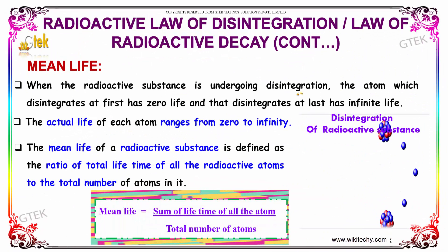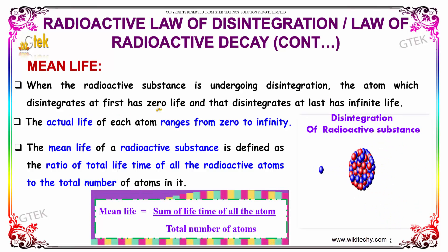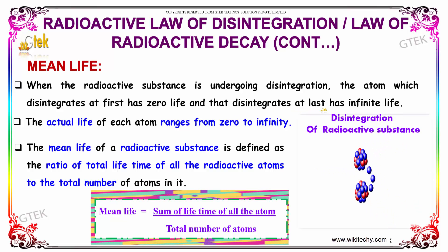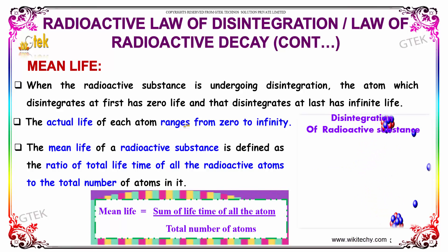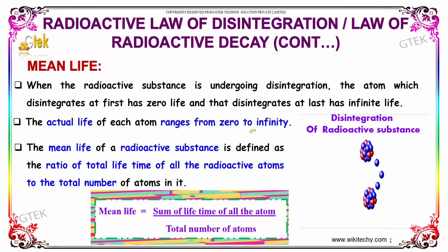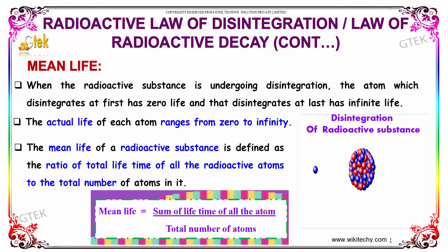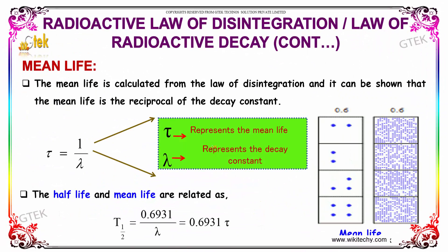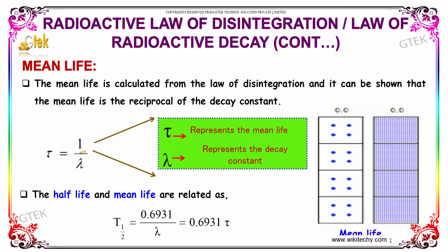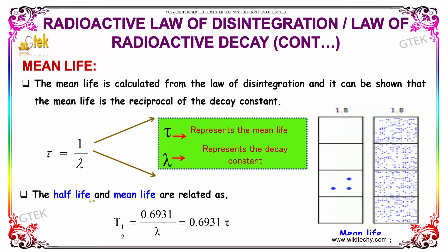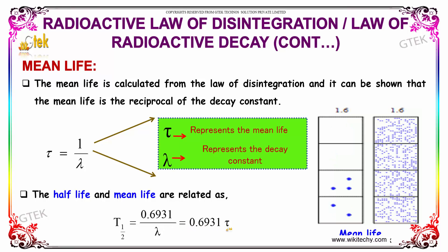When a radioactive substance undergoes disintegration, the atom which disintegrates first has zero life, and the atom that disintegrates last will have an infinite life. The actual life of each atom ranges from zero to infinity. The mean life of a radioactive substance is defined as the ratio of the total lifetime of all radioactive atoms to the total number of atoms. It can be shown that the mean life period is the reciprocal of the decay constant. The half-life and mean life are related as T½ = 0.6931/λ = 0.6931τ.